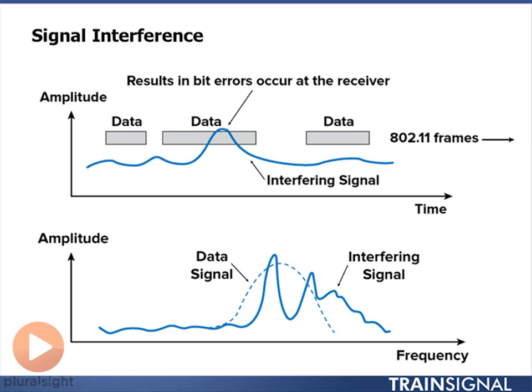What happens here is if I start to transmit my data — in the top diagram I'm sending my data frames and everything's going really good — and all of a sudden something transmits in my frequency band and causes interference. What happens is that I can't recover those bits if that interference is stronger than my transmitted signal.